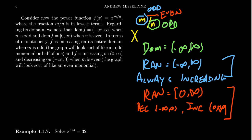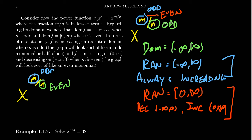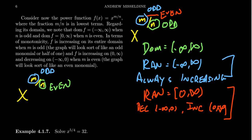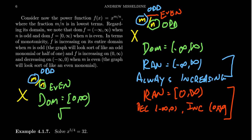Now consider the situation where the denominator is even. Since the fraction is in lowest terms, that means the numerator must necessarily be odd — so there's only one sub-case here. There is an important caveat: your domain is not going to be all real numbers; your domain is only zero to infinity. If x is negative and you have an even denominator, you're taking a square root, fourth root, or sixth root of a negative number, which gives imaginary numbers.